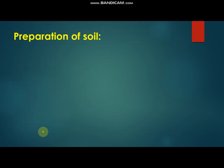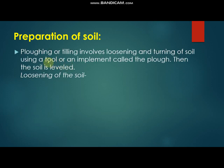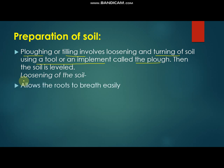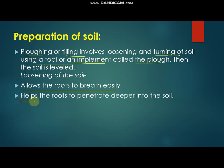Preparation of the soil is the first step. Plowing or tilling involves loosening and turning of the soil using a tool or implement called a plow — all of you have seen the plow used by farmers. Then the soil is leveled. The main benefits of loosening the soil — questions often asked in examinations — include: allowing roots to breathe easily, and helping roots to penetrate deep inside the soil.